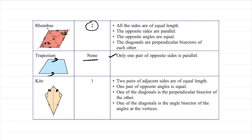A kite has only one pair of opposite angles that are equal — for instance if this one is 70, the other is also 70. One of the diagonals is a perpendicular bisector of each other, and the other diagonal is the angle bisector of the angles at the vertices — meaning it divides that angle into two equal parts.